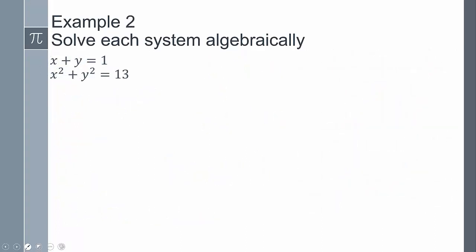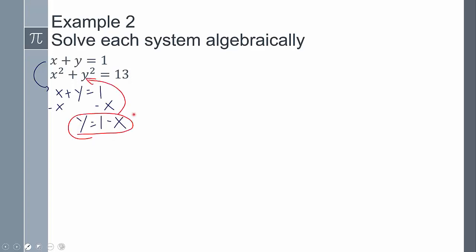In the next example, there is no variable by itself. When that happens, we need to spend time getting a variable by itself. I'll use the equation x plus y equals one and solve for y. Subtracting x from both sides gives y equals one minus x. Now a variable is by itself, so I can plug what y equals into the other equation.